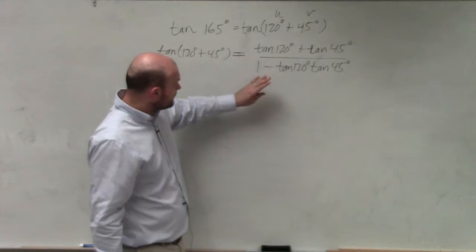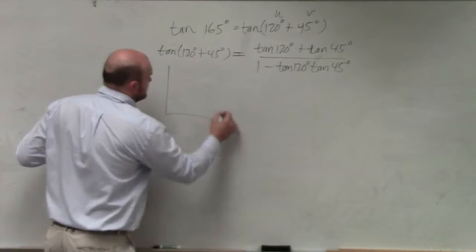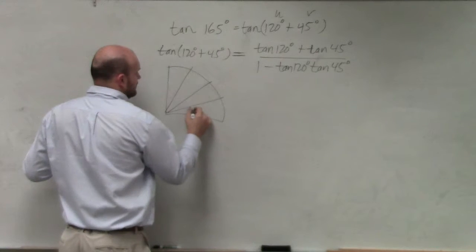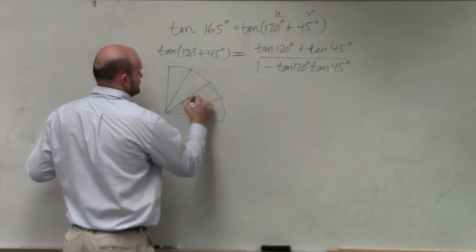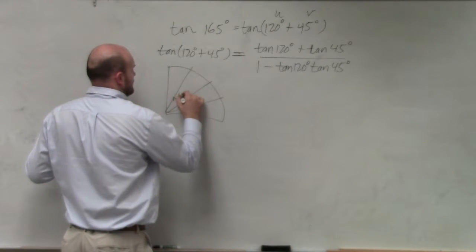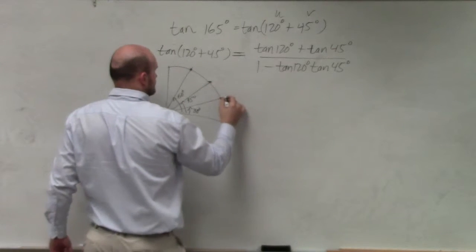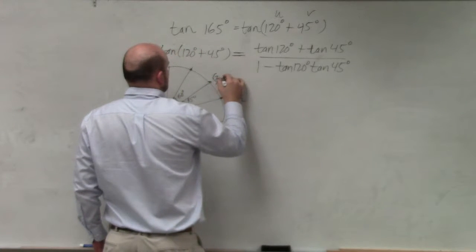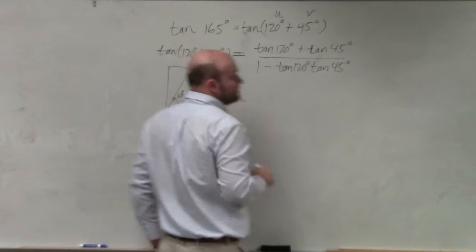So now we need to figure out what the tangent of 120 degrees is. Now, again, remember our unit circle here. We're going to be talking about degrees, not radians. OK? And we know these points. OK.